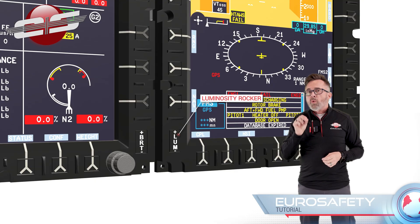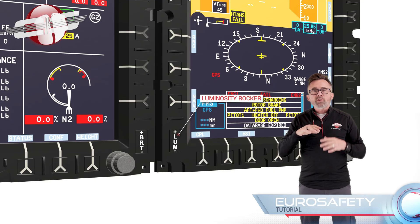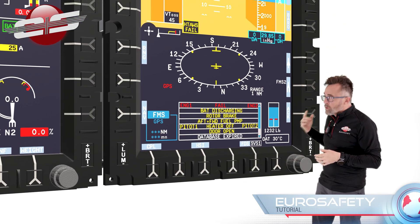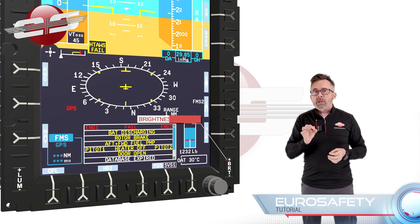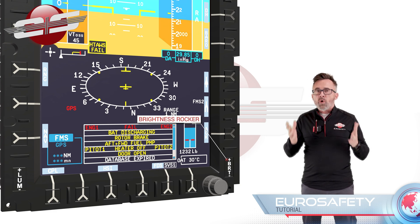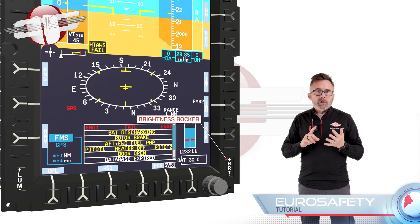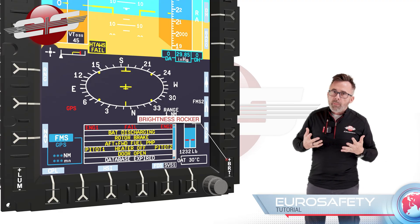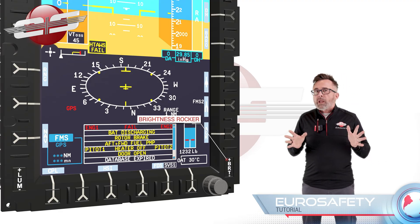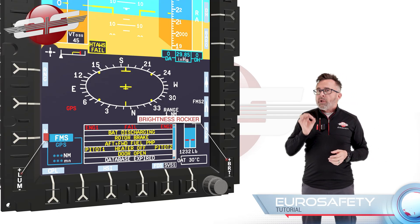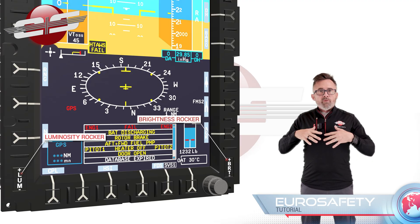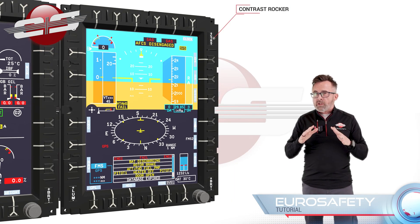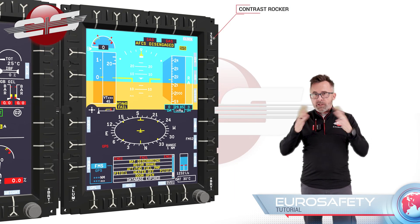The Illuminosity rocker in the lower left corner changes the overall screen brightness. The brightness rocker in the lower right corner brightens or dims the picture overlays only — for instance, the digital map, the weather picture, any video, and electronic flight pages — but it doesn't change the screen's backlight. So the Illuminosity rocker is your overall backlight for the whole display, and the contrast rocker changes how strongly the symbols and text stand out against the background.